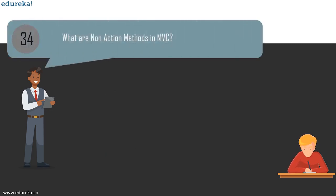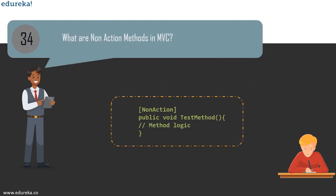The next question is: what are non-action methods in MVC? In MVC, all public methods are treated as actions. If you are creating a method and do not wish to use it as an action method, the method has to be decorated with the NonAction attribute. So if you have a method called TestMethod and don't want it used as an action method, you apply the NonAction attribute as shown.